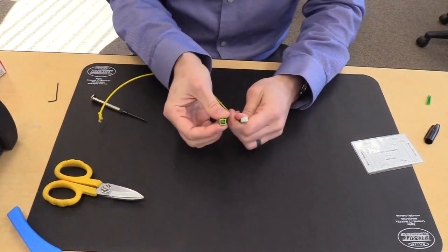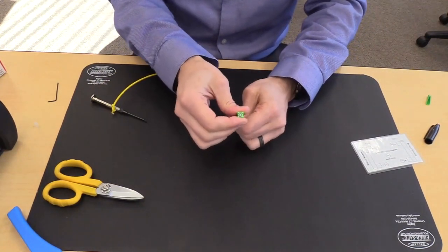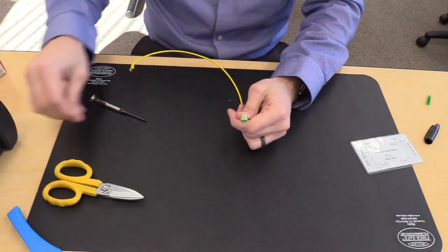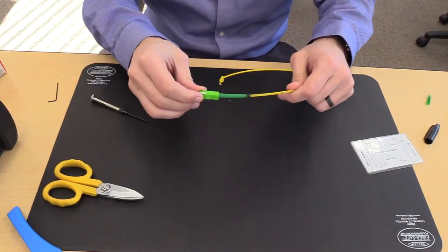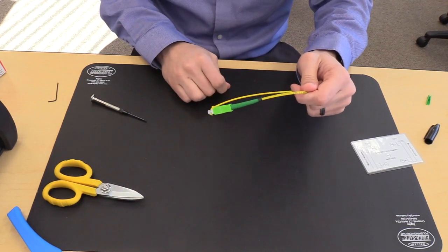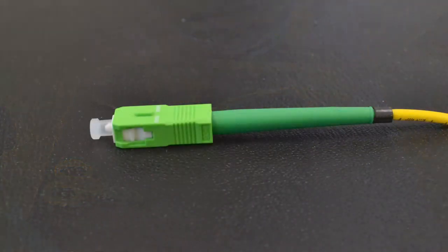Take your SC housing, match up the keyways, and slide it on. An audible click should be heard. Put the dust cap on. The termination of the FIS 3mm Armadillo splice-on connector is now complete.